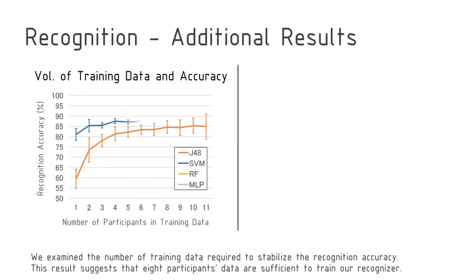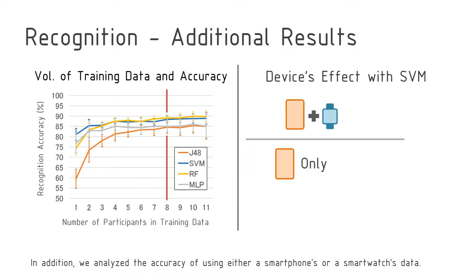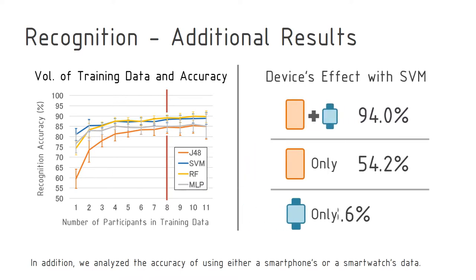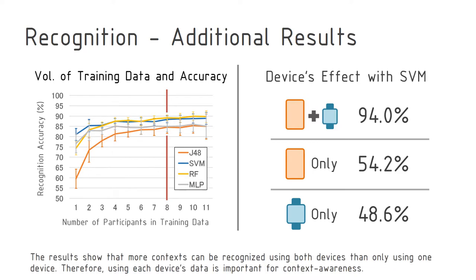We examined the amount of training data required to stabilize the recognition accuracy. This result suggests that eight participants' data are sufficient to train our recognizer. In addition, we analyzed the accuracy of using either a smartphone's or smartwatch's data. The results show that more contexts can be recognized using both devices than only one device. Therefore, using each device's data is important for context awareness.